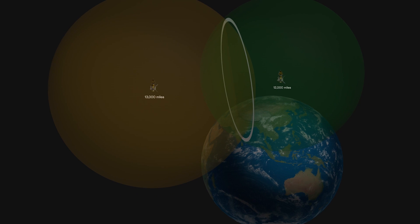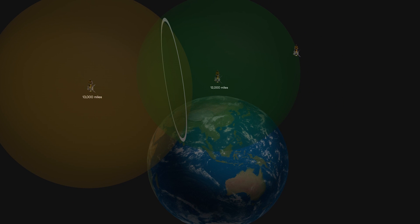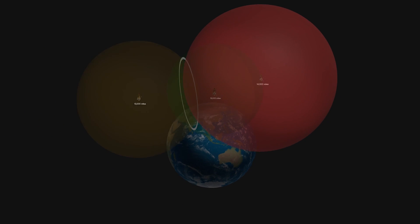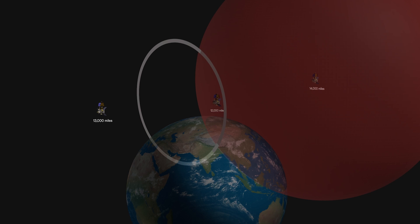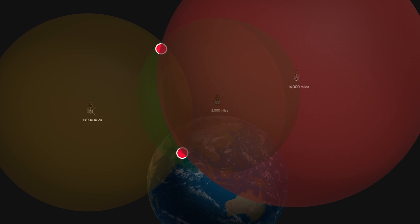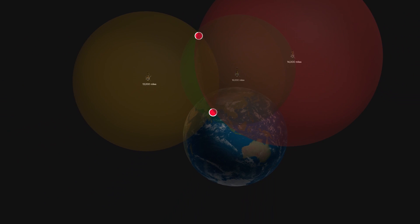Let's bring in a third satellite. If you are, say, 14,000 miles away from it, we get another sphere of possible locations. This sphere intersects the previous circle at two different points. So given the three distances, you could be at either one of these two locations. But which one?